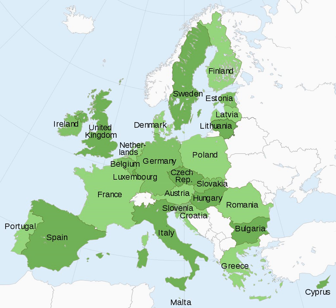According to the Copenhagen criteria, membership of the European Union is open to any European country that is a stable, free-market liberal democracy that respects the rule of law and human rights. Furthermore, it has to be willing to accept all the obligations of membership, such as adopting all previously agreed law — the 170,000 pages of acquis communautaire — and switching to the Euro.